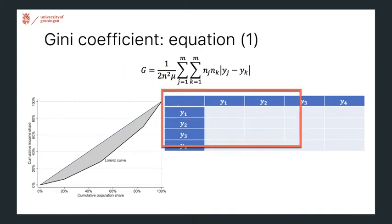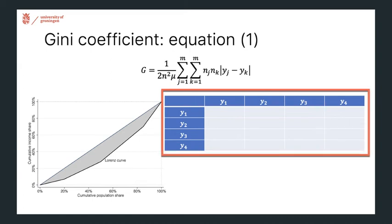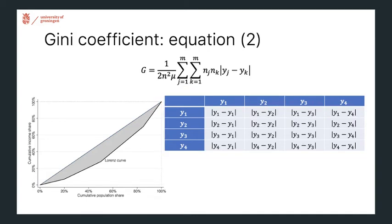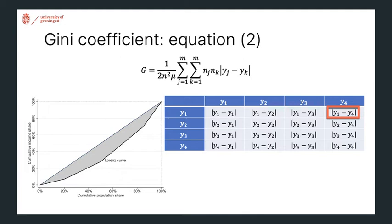To visualize this, consider a table for the four income groups shown in the Lorenz curve. Computing a Gini coefficient essentially means filling in this table of pairwise income comparisons. You look at each absolute income difference — group one versus itself, group one versus group two, group one versus group three, group one versus group four, and so on. Then you work your way through the equation.